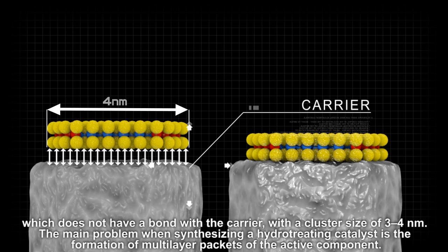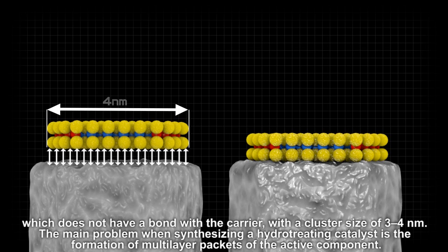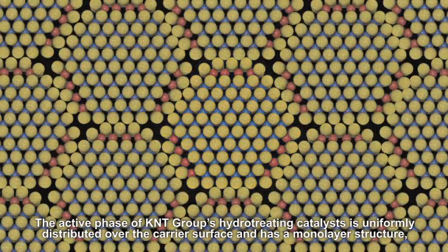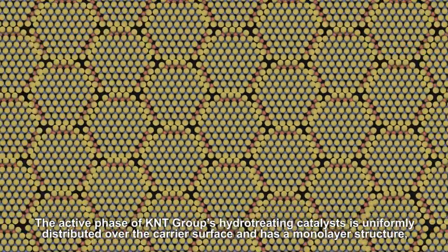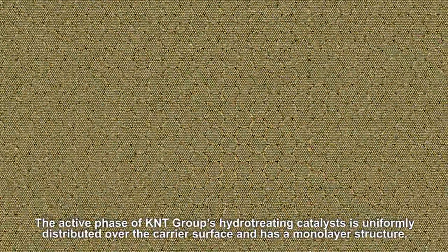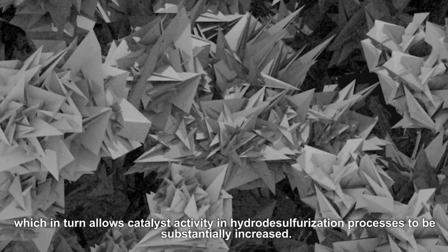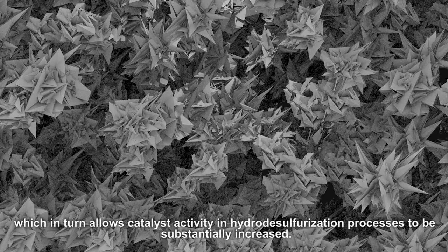The main problem when synthesizing a hydro-treating catalyst is the formation of multi-layer packets of the active component. The active phase of KNT Group's hydro-treating catalysts is uniformly distributed over the carrier surface and has a monolayer structure, which in turn allows catalyst activity in hydro-desulfurization processes to be substantially increased.